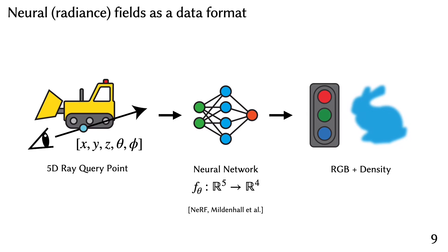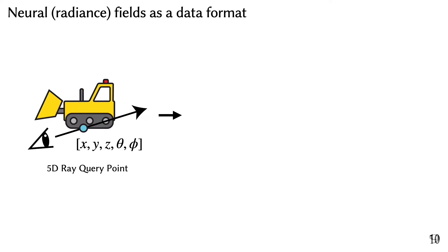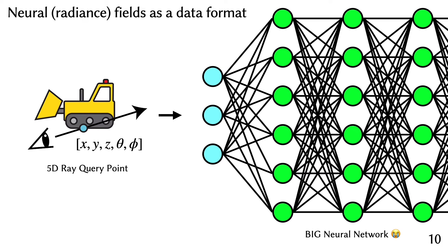Why are they slow to render? Neural radiance fields are slow because they require a very large neural network to encode the scene at high fidelity. Over many query points over many rays, this becomes a huge computational burden.